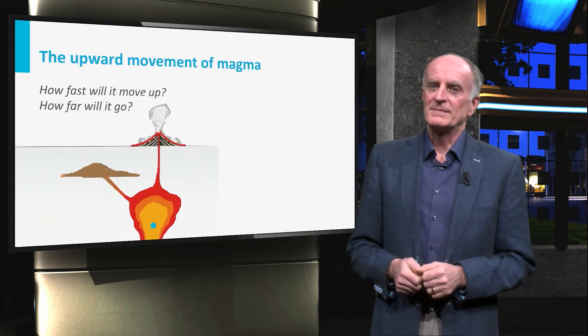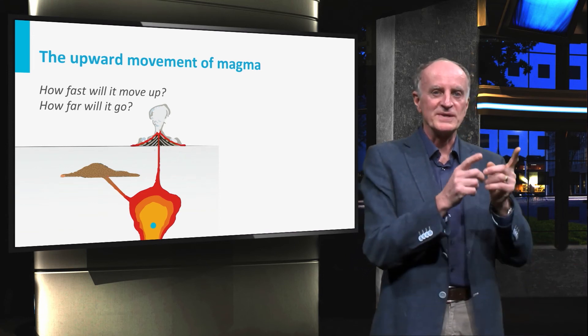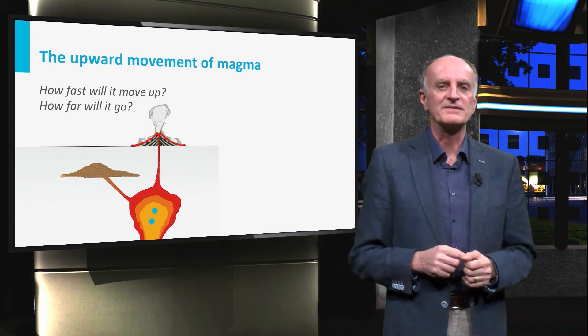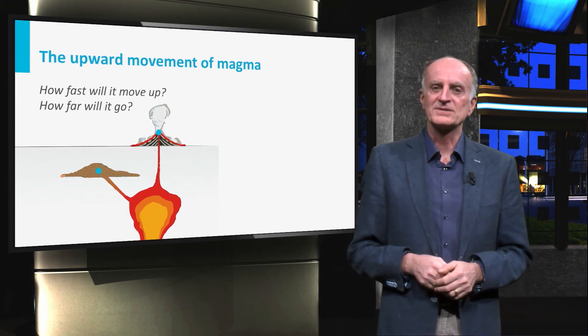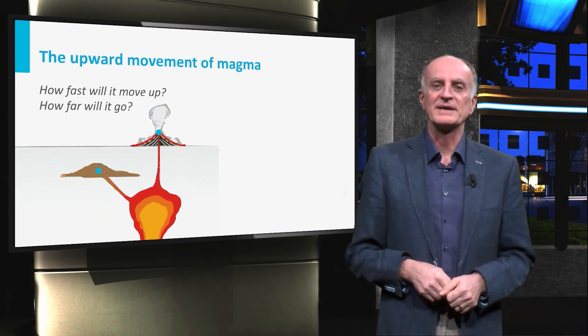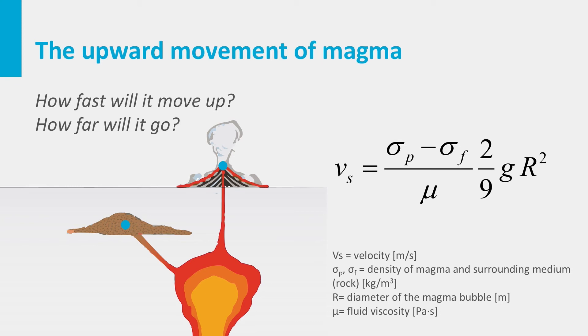The magma has a density lower than that of the surrounding rock and will start moving upward, driven by the negative density difference. A simplistic but interesting quantitative description is provided by Stokes law. This shows that the velocity of the rising magma bubble is directly proportional to the density difference and inversely proportional to the viscosity.